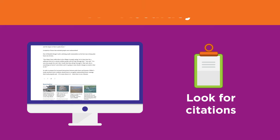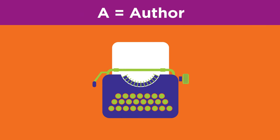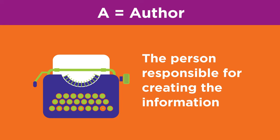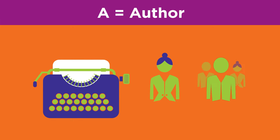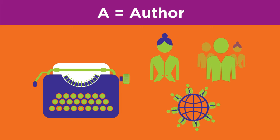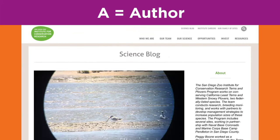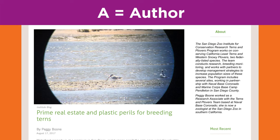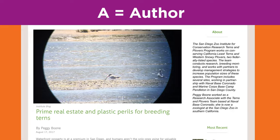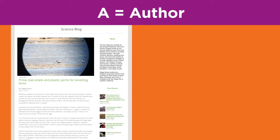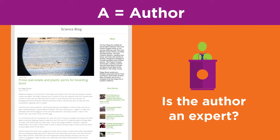Speaking of authors, the second A in TRAP stands for author. Author means who is responsible for creating the information on the site. Sometimes this is a person, but other times this could be a group of people or an organization. Let's investigate the author of the information. Look for the words 'about' or 'info,' which may include information about the author. These links tend to be on the perimeter or edge of the site. While reading, think about these questions: Is the author an expert on this topic?